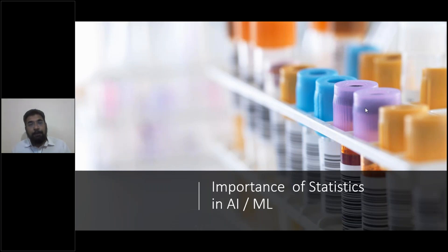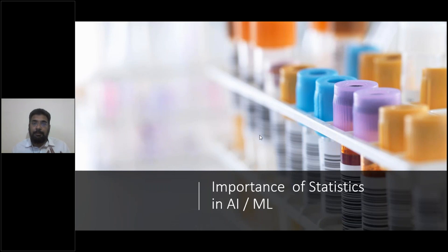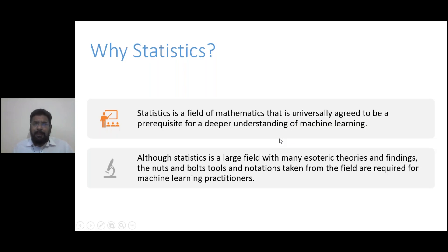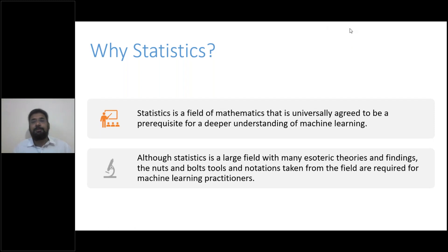The science of statistics is at the heart of all of these technologies. The importance of statistics in artificial intelligence, machine learning, and business intelligence cannot be overstated. Statistics, by definition, is a field of mathematics universally agreed to be a prerequisite for a deeper understanding of machine learning — that's not just my view, that's what the literature out there will tell you.